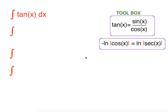Hi everyone! In this video we are going to integrate tangent x. First of all we are going to rewrite tangent in terms of sine and cosine, using the identity tangent equals sine x over cosine x. So let's rewrite this as the integral of sine x over cosine x dx.